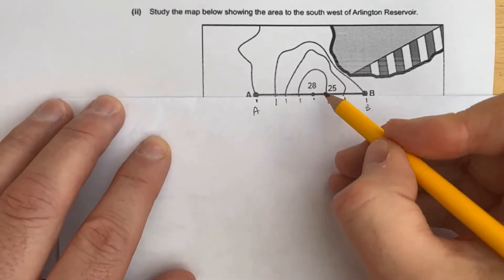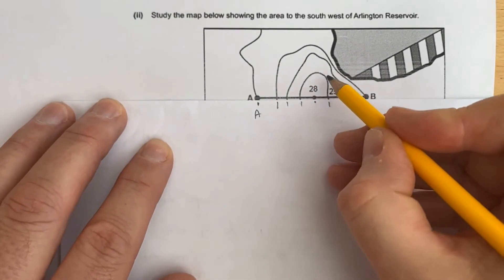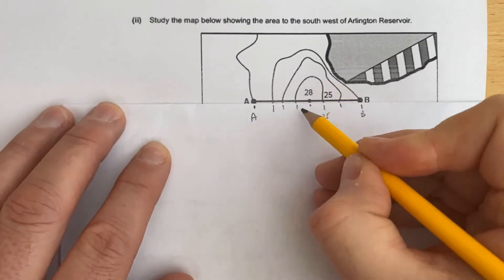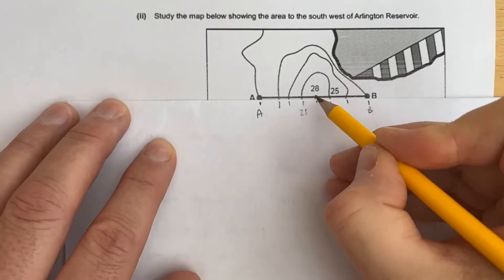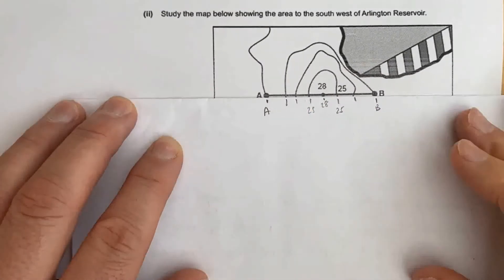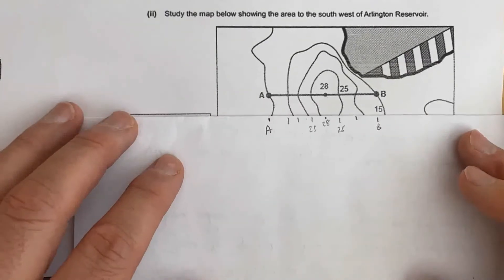The next job is to work out exactly the height of the contours. So I've got there at 25, and it goes there so that's 25, and at that point there is 28. And then I have to just work out the others which I can't see there, so I carefully pull it down.